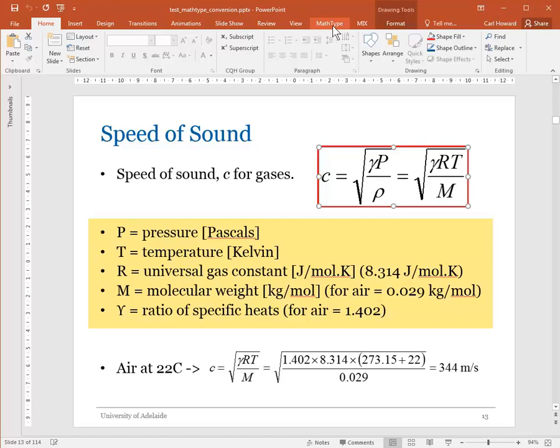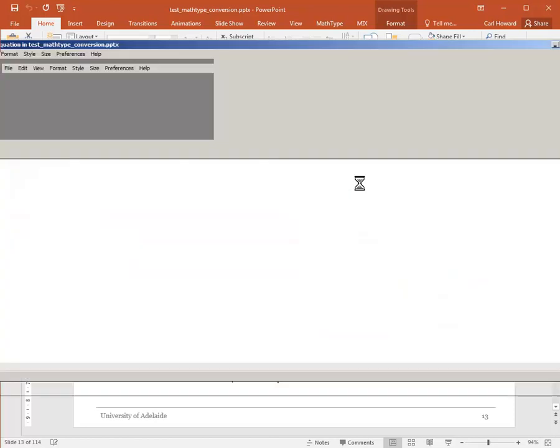I'm using version 6.9 and I had a serial number for that. I don't know if you can still get version 6.9, but this one will work and I'll show you how. This is my equation. If I double click on it, it should bring up the old equation editor.